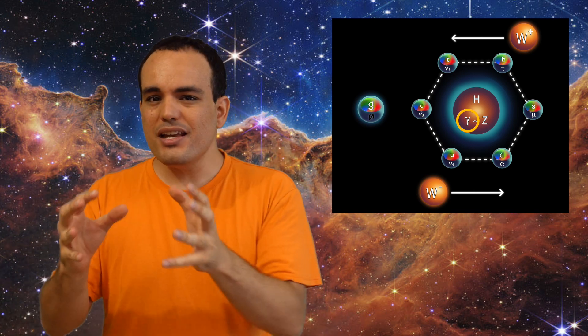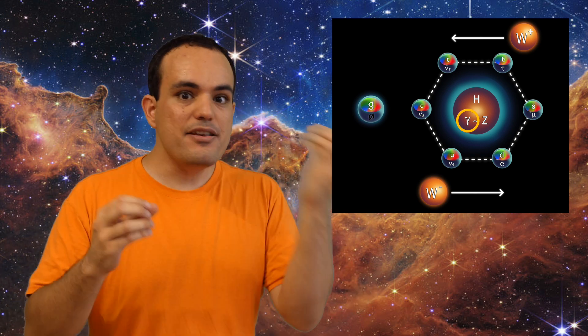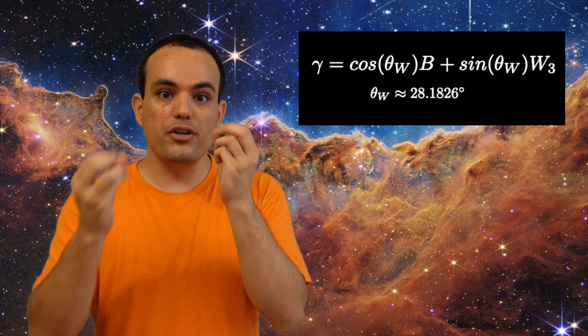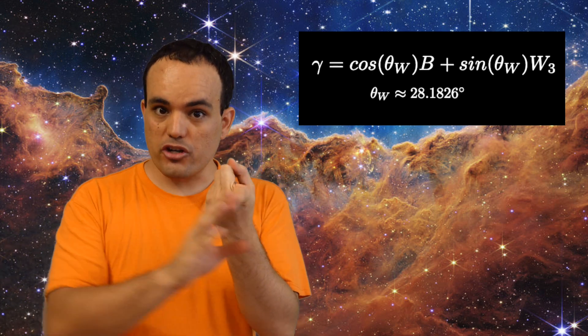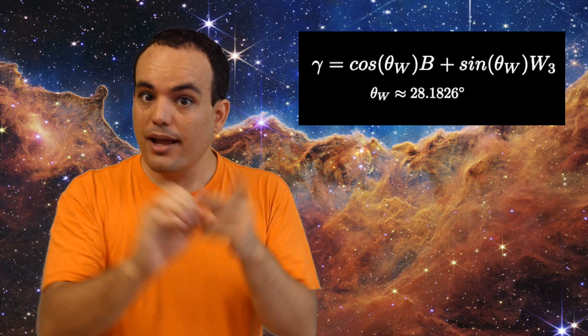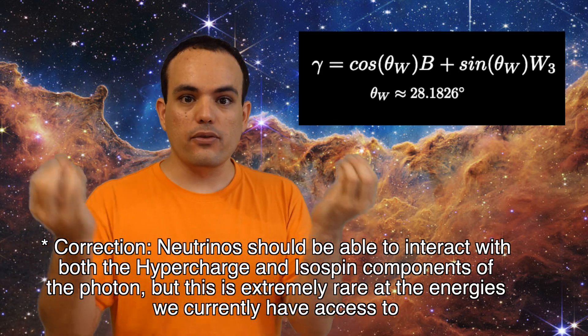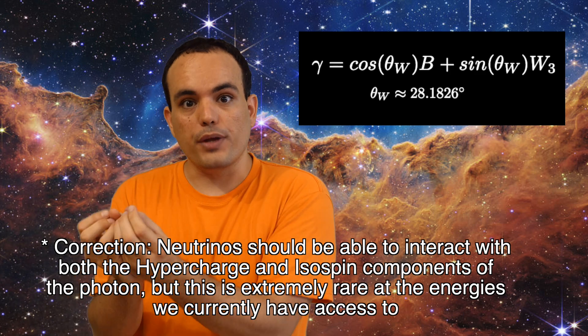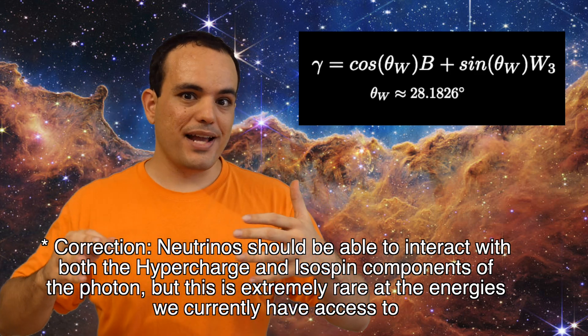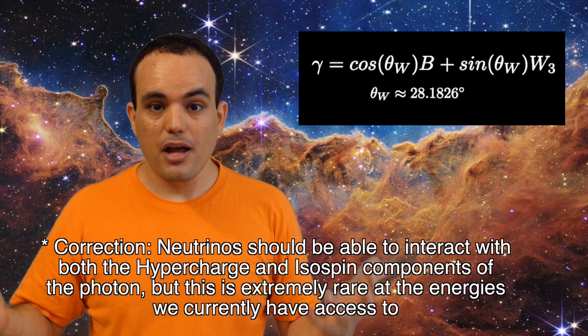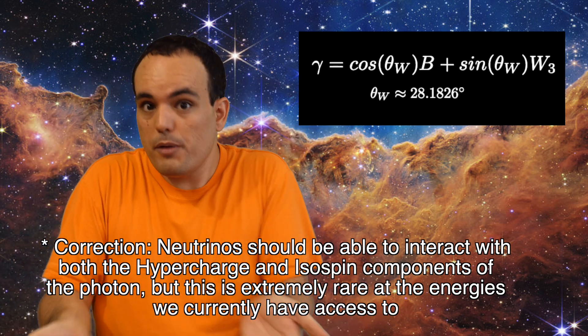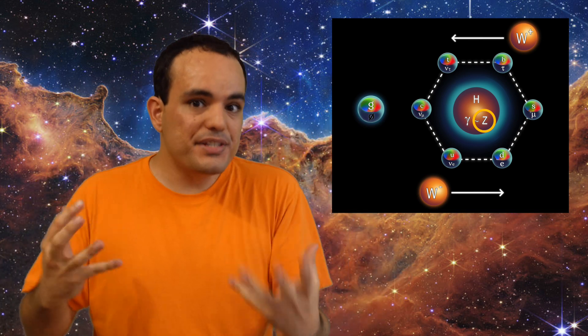And for this reason, you could think that maybe neutrinos cannot interact with photons. But remember that the photon is a combination of the neutral bosons of hypercharge and isospin. And the neutrino certainly has isospin. So it should be able to interact with photons through their W3 component. Although we have never observed this to happen. But given everything we know, it should be possible.